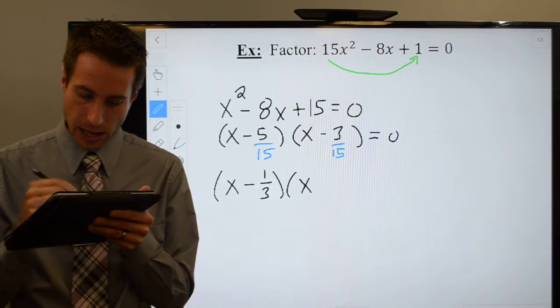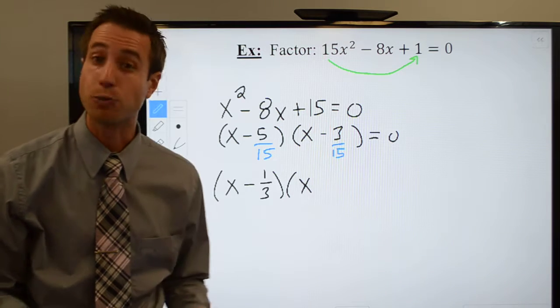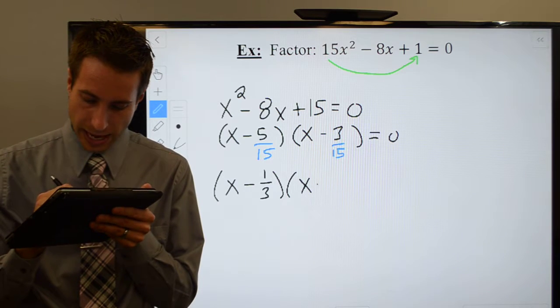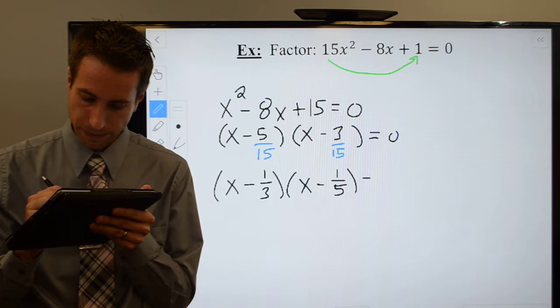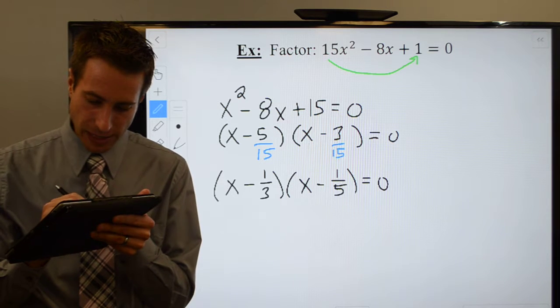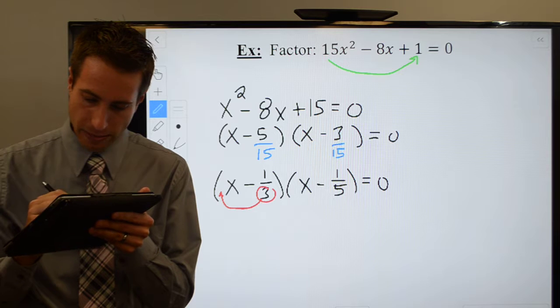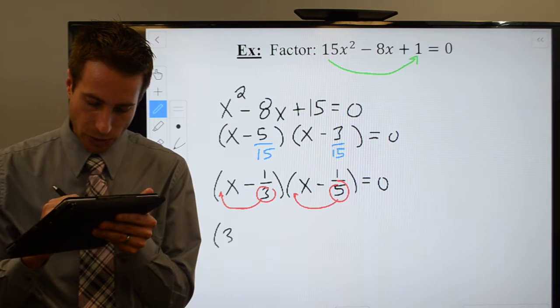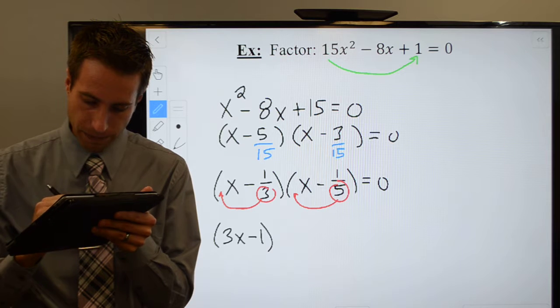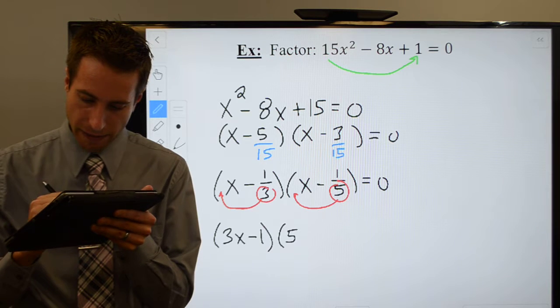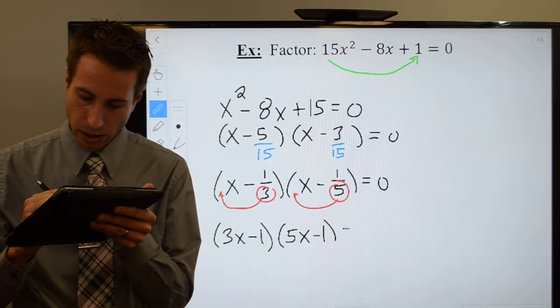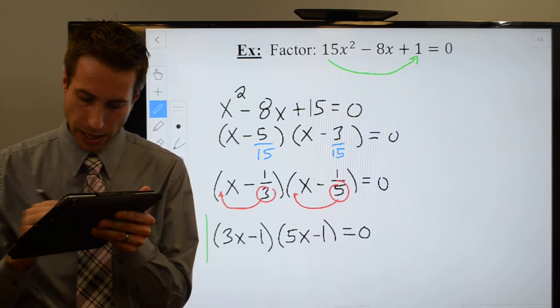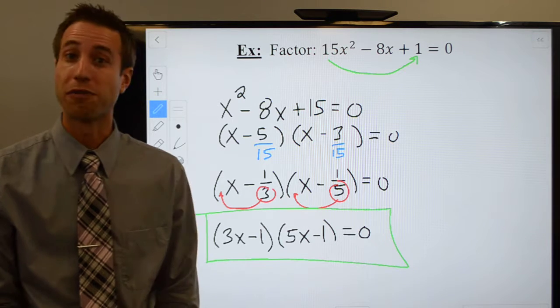And x, I can reduce each of those by a 3. So it's going to leave me with a negative 1 fifth. And the final step, take those denominators, put them in front of the variable, and I get 3x minus 1 and the quantity 5x minus 1 are equal to 0. And you have got your factors.